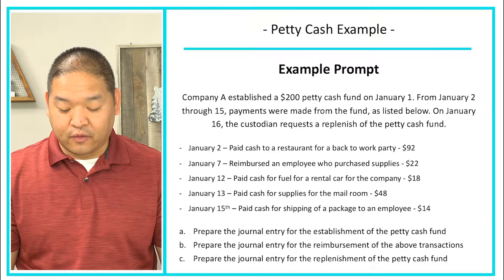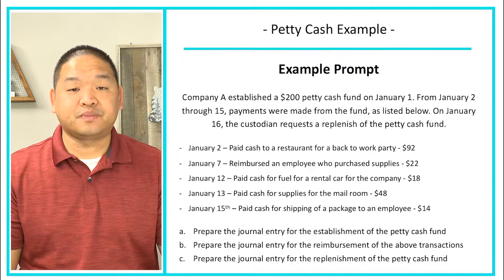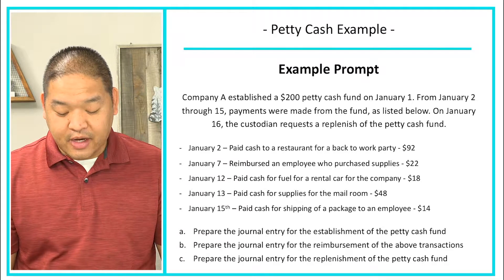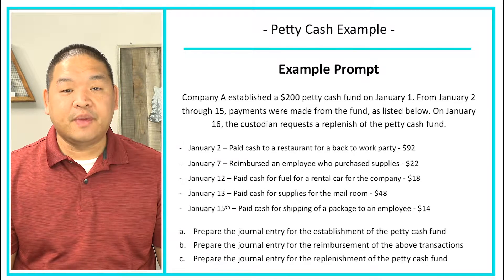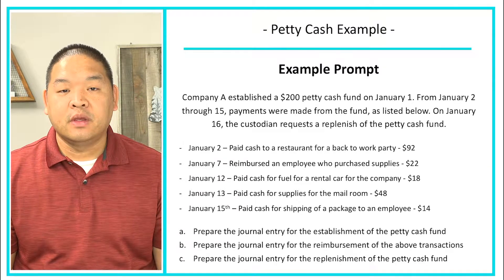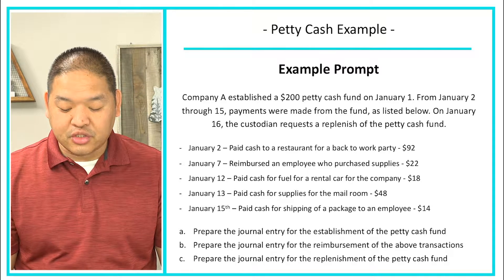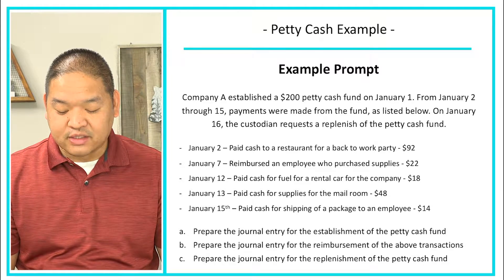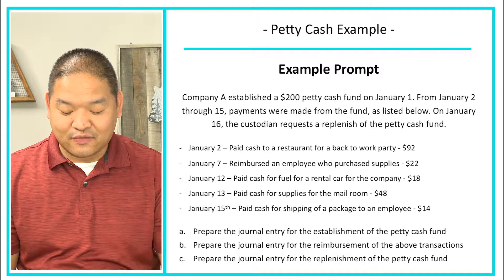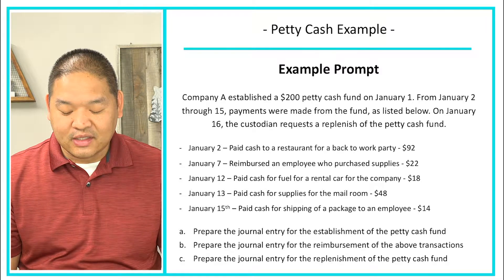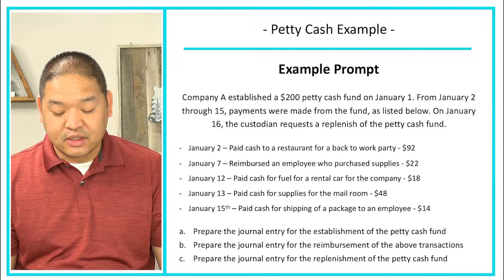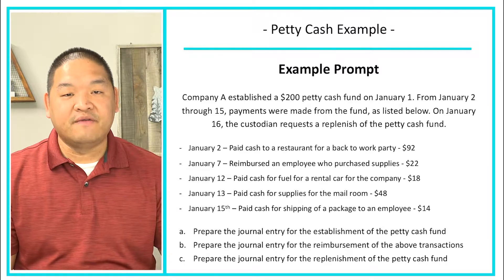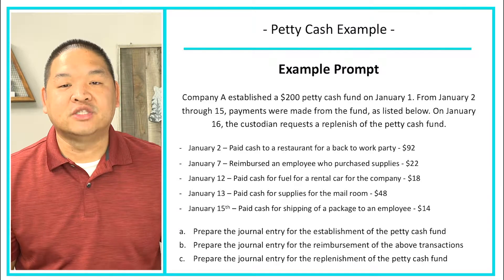On January 15th, we paid cash for shipping of a package to an employee for $14. Part A asks us to prepare the journal entry for the establishment of the petty cash account. Part B asks us to prepare the journal entry for the replenishment of the transactions above. Part C asks us to prepare the journal entries for the replenishment of the petty cash fund.